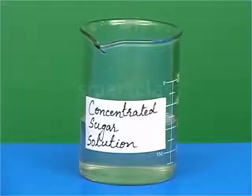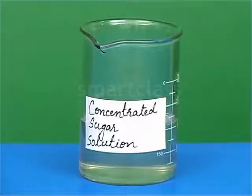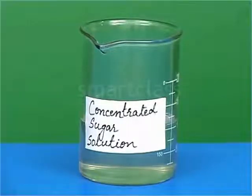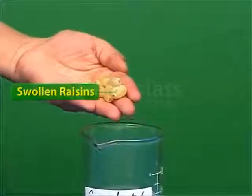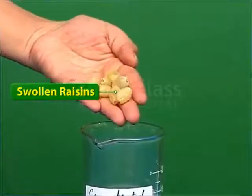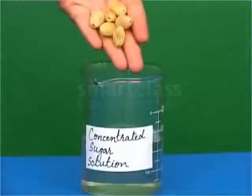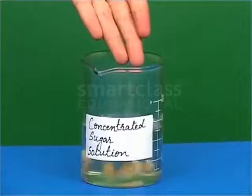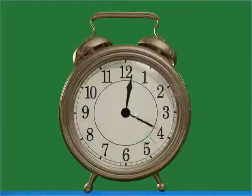Now, to understand the process better, let us do another small activity. Take another beaker filled with concentrated sugar solution. Now add the swollen raisins in it and leave the beaker undisturbed for about four to five hours.